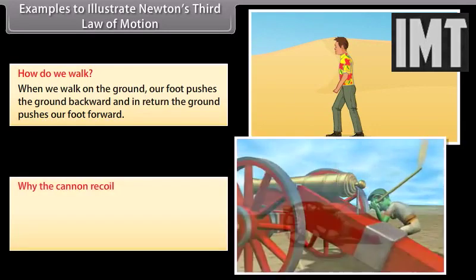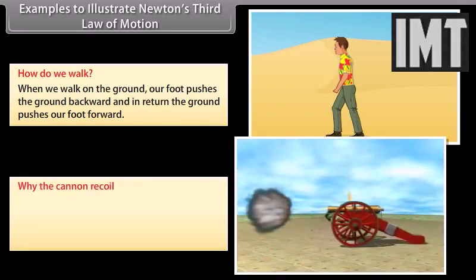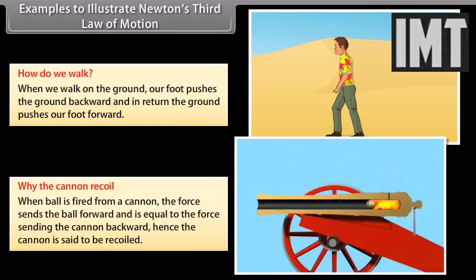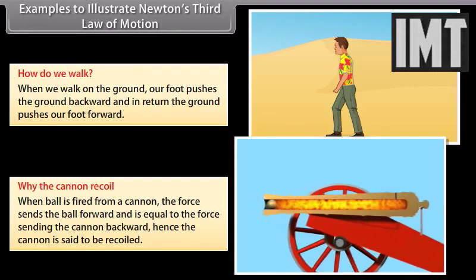Why does the cannon recoil? When ball is fired from a cannon, the force sends the ball forward and is equal to the force sending the cannon backward. Hence the cannon is said to be recoiled.